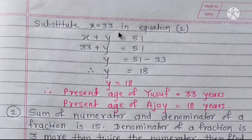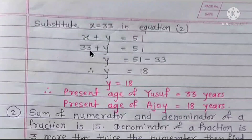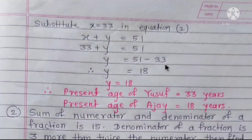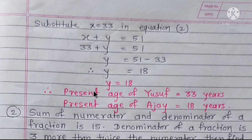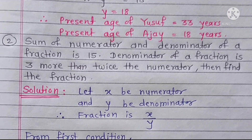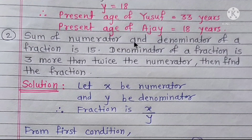Substitute X equal to 33 into Equation 2: 33 plus Y equals 51, so Y equals 51 minus 33, which gives Y equal to 18. Therefore the present age of Yusuf is 33 years and the present age of Ajay is 18 years.